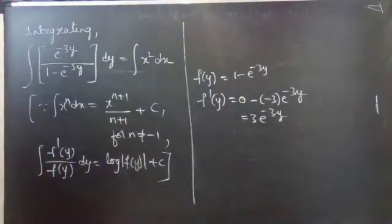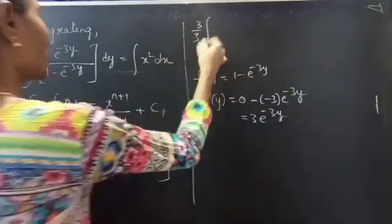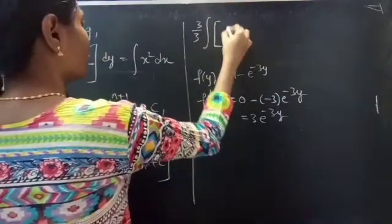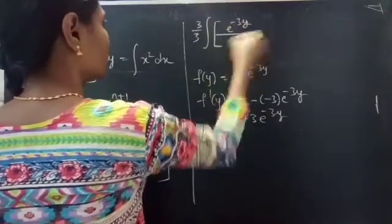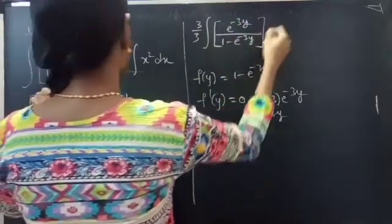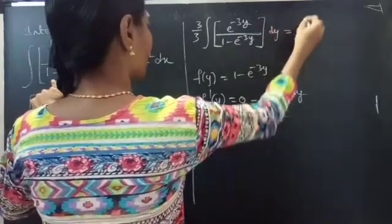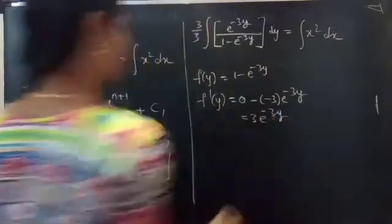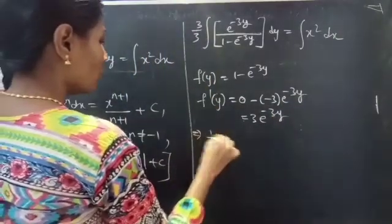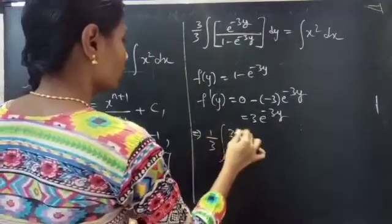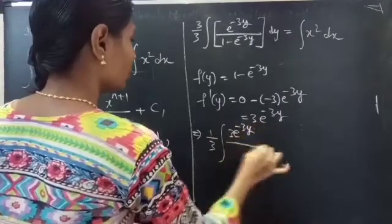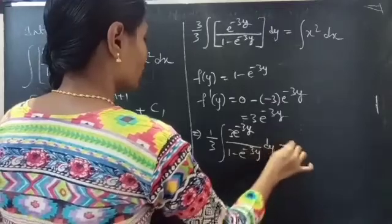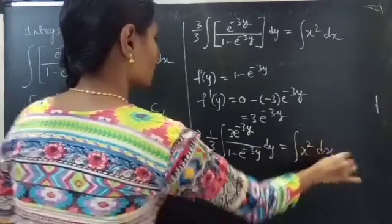So multiply and divide by 3 on the LHS. We can write this as 1/3 times integral of 3 times e to the power minus 3y over (1 minus e to the power minus 3y) dy equals integral of x squared dx.